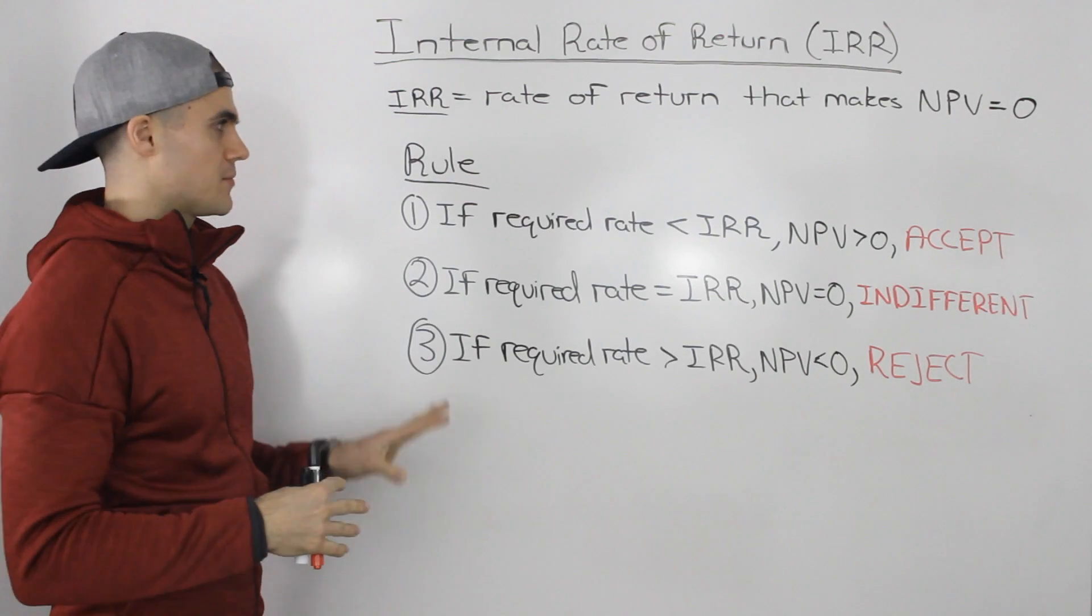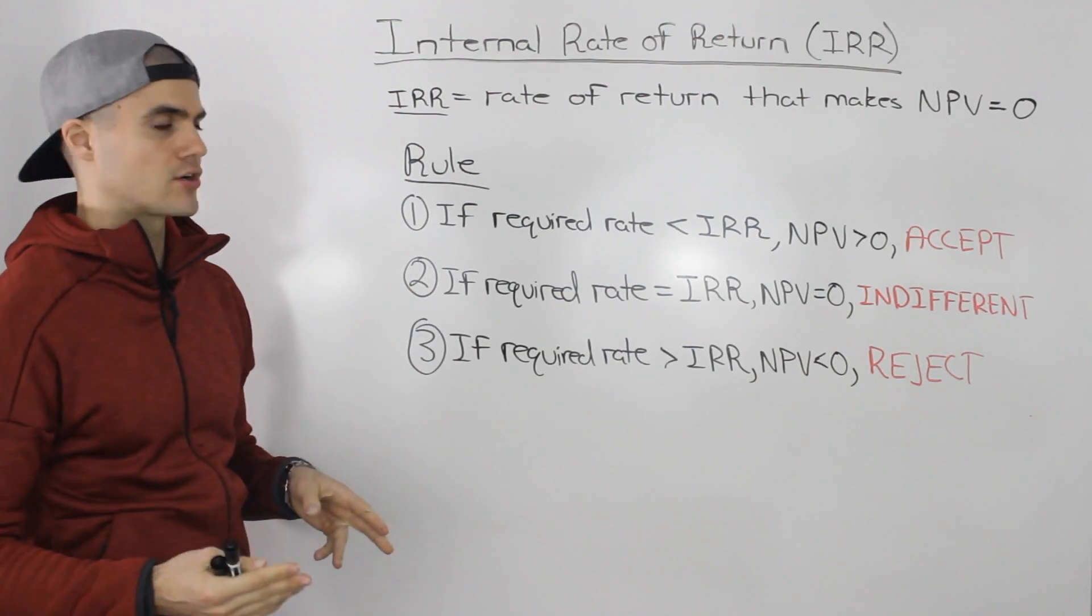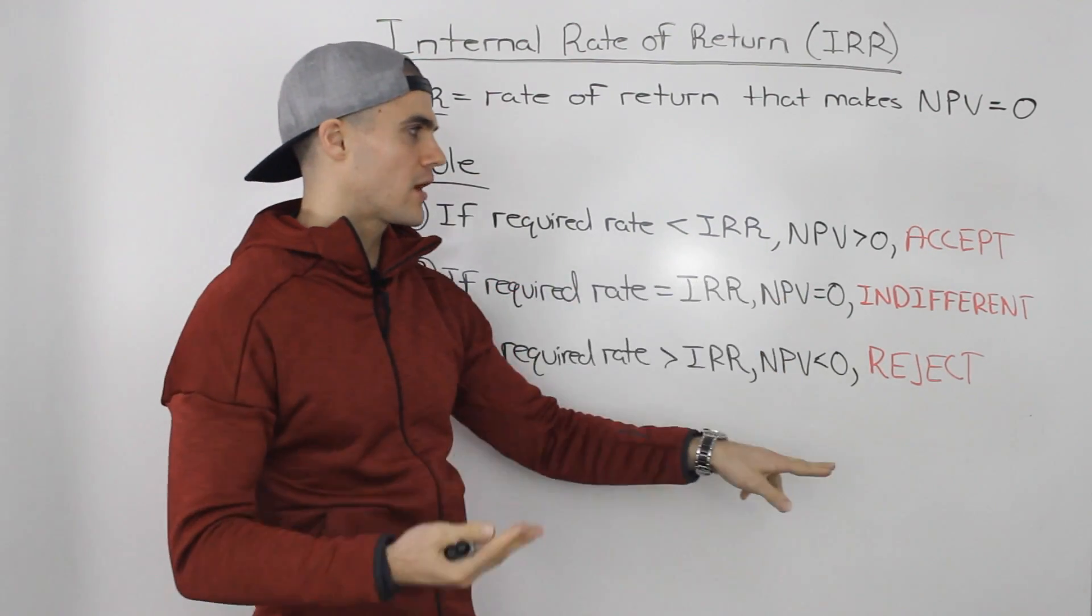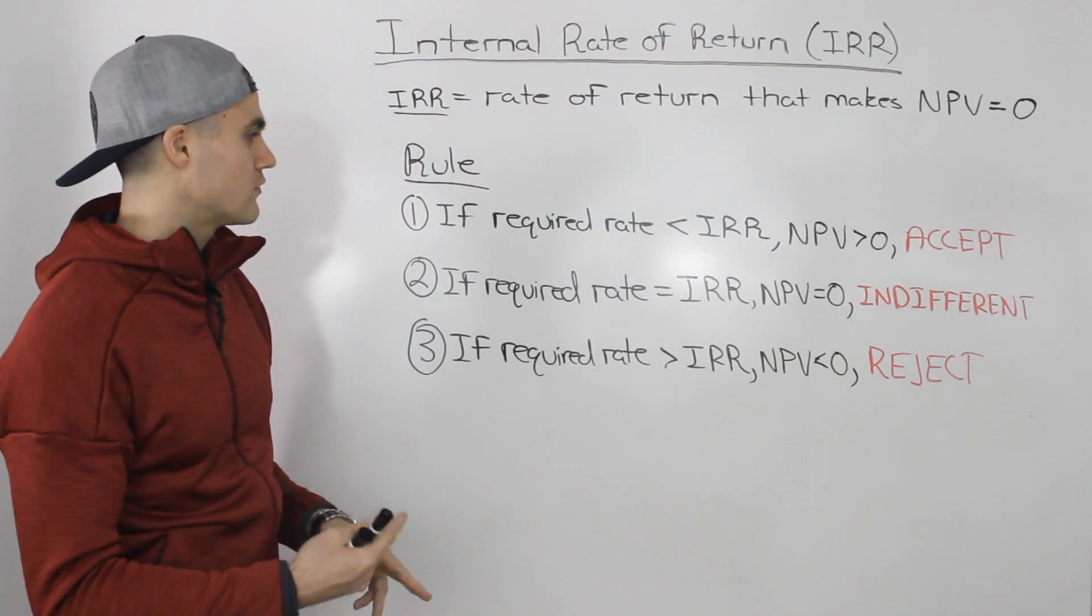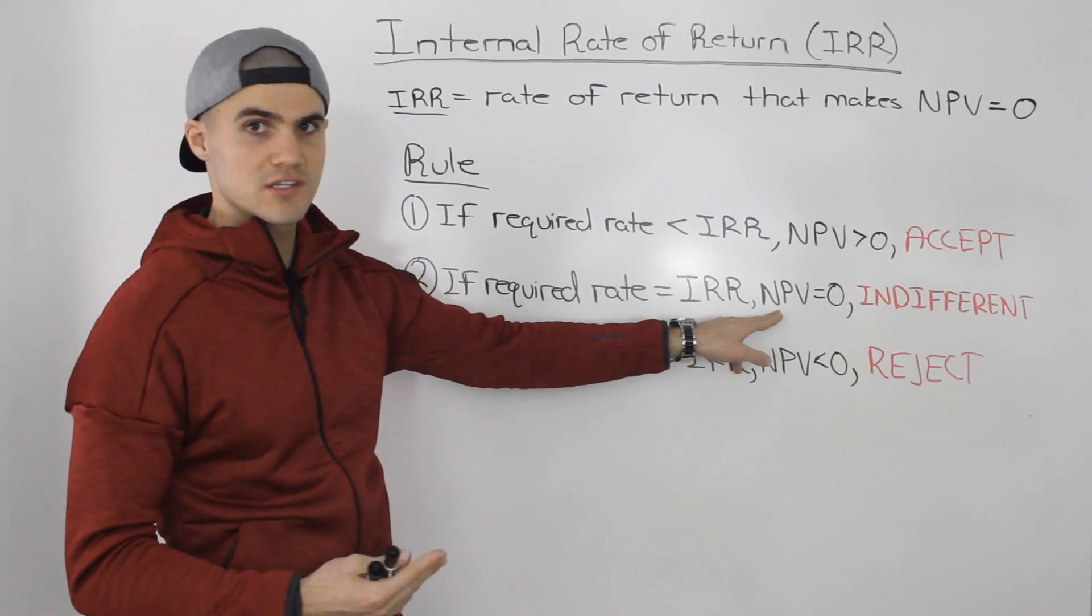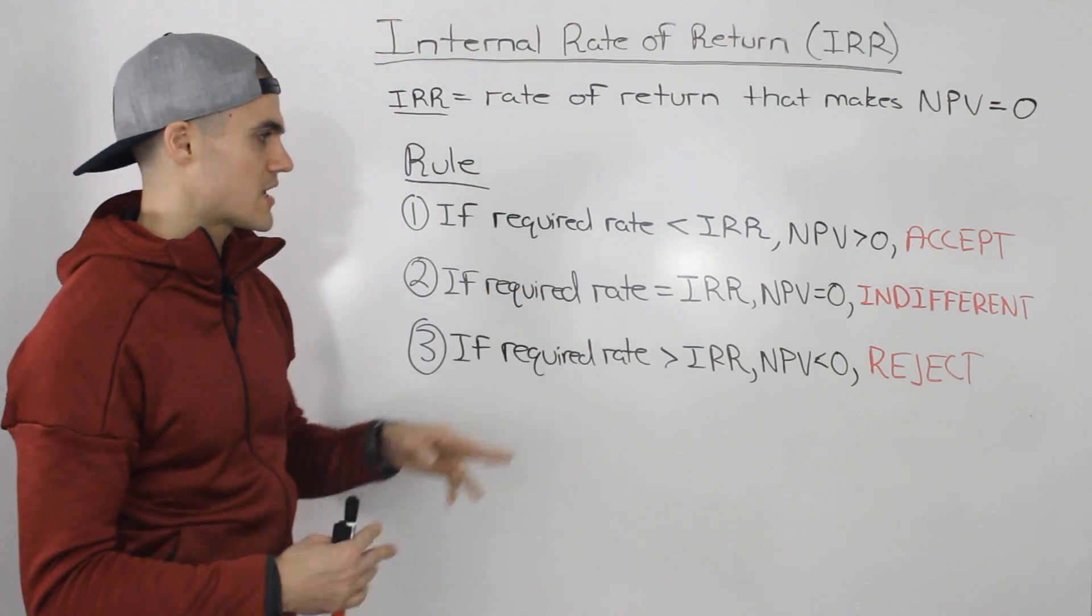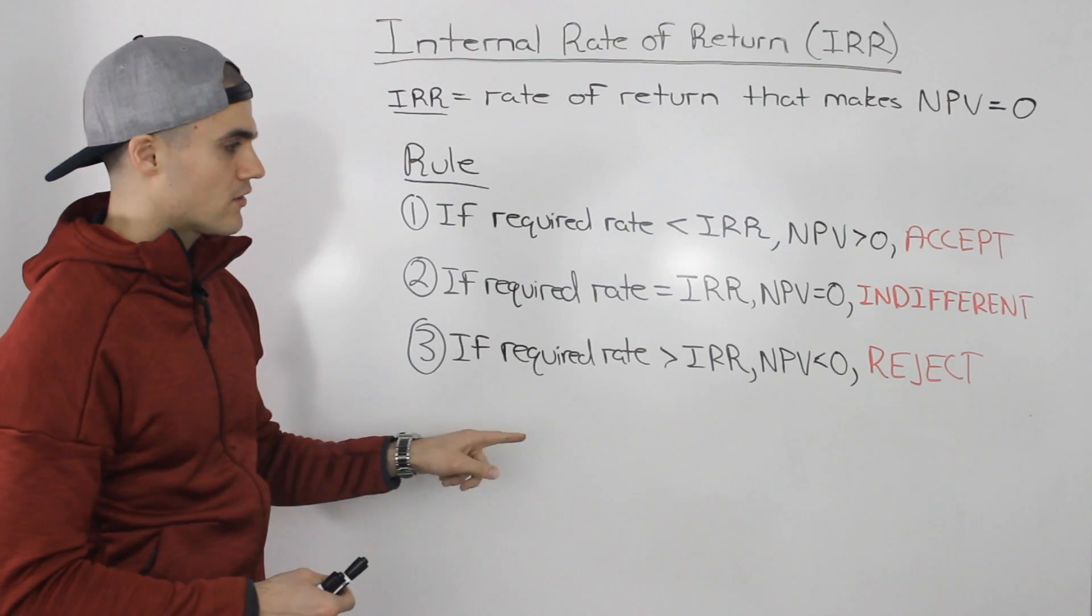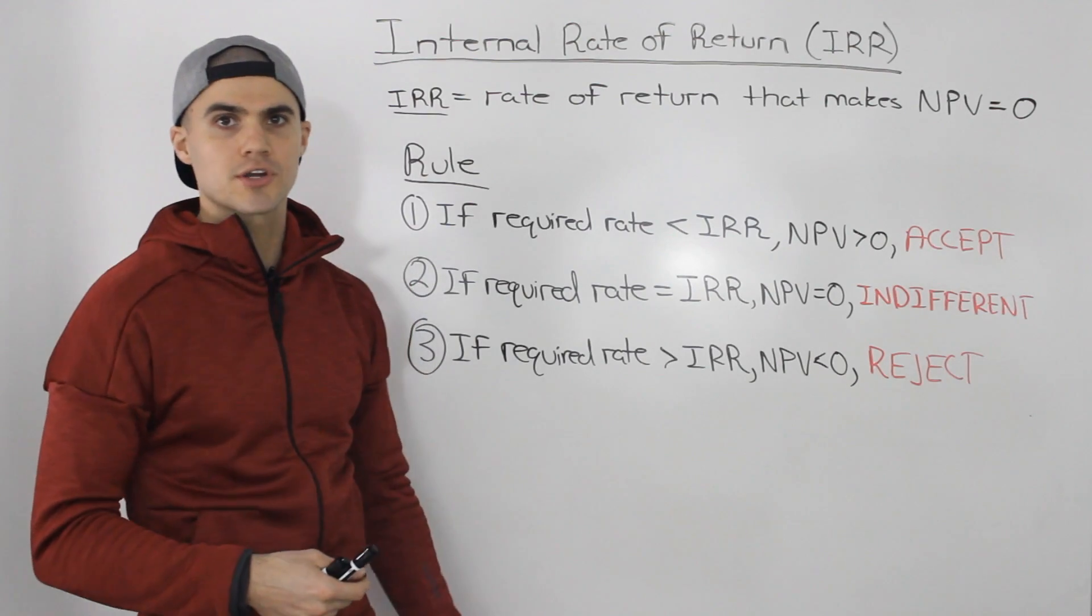So summing all of those findings up in a general rule. So the first rule: if the required rate of return is less than your IRR, then we know our NPV is going to be greater than zero. We would accept that project. If the required rate of return on the project is equal to the IRR of the project, then we know the NPV is equal to zero and we would be indifferent of whether to accept it or reject it. And then if the required rate is greater than the IRR, we know the NPV is going to be less than zero. We would reject that project.